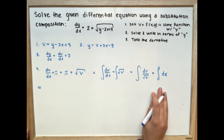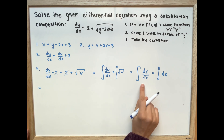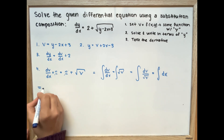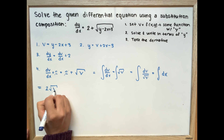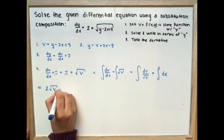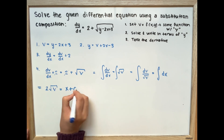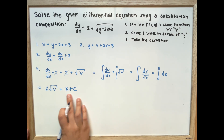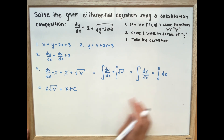So we're going to have the integral of dv over the square root of v equal to the integral of dx. The integral of the left side is 2 times the square root of v, which is equal to x plus c.